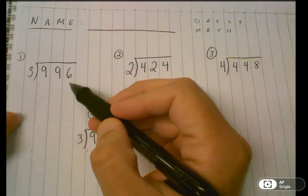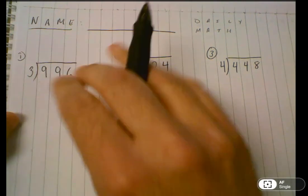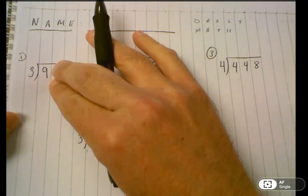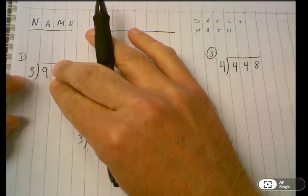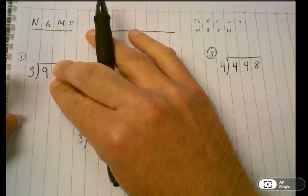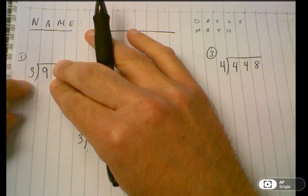To do a three-digit dividend divided by a one-digit divisor, we start and ask ourselves: can I divide this nine by three? Or can I skip count by three and get close to nine? The answer is yes. As long as this number is bigger than the divisor, you can and should start with that first number in the hundreds.